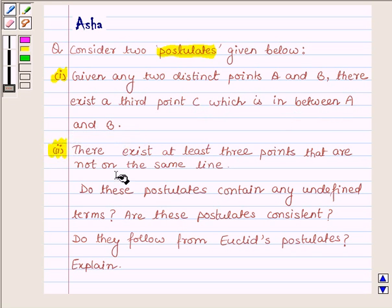Second, there exist at least three points that are not on the same line. Do these postulates contain any undefined terms? Are these postulates consistent? Do they follow from Euclid's postulates? Explain.